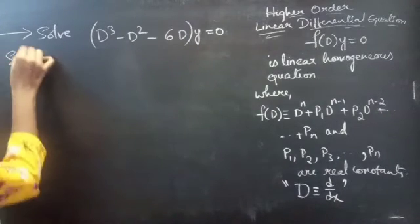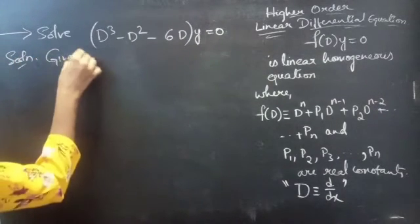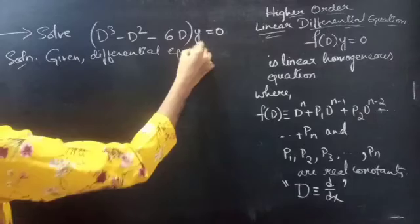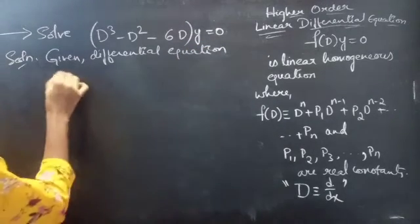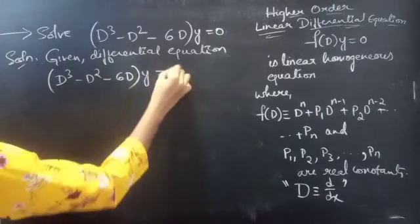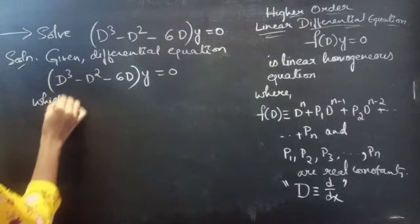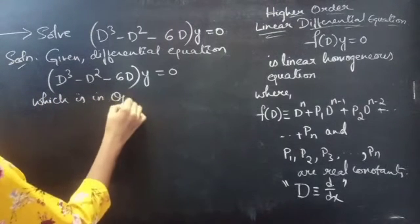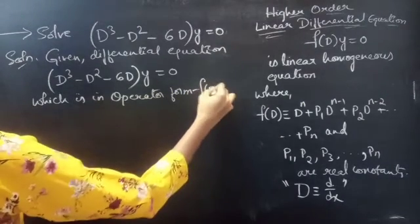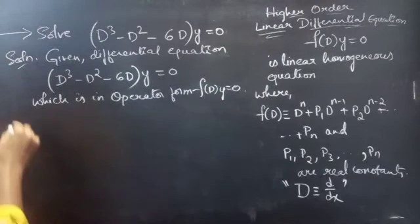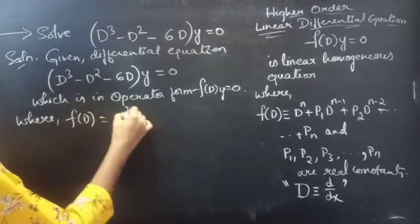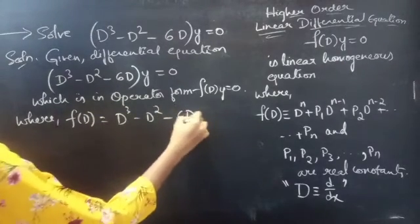Solution. Given differential equation: d-cubed minus d-squared minus 6d into y equals to 0, which is in operator form f of d into y equals to 0, where f of d equals to d-cubed minus d-squared minus 6d.